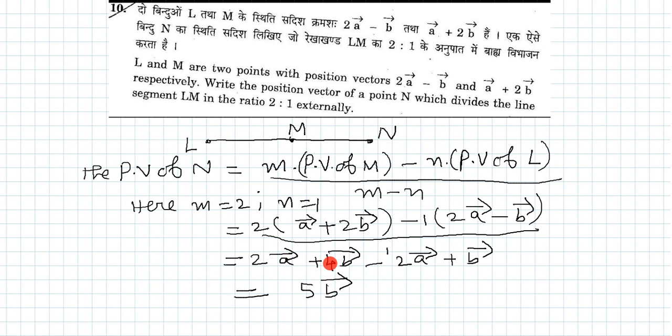So we get 4b vector plus b vector, that is equal to 5 times the b vector. That is the answer for this particular problem.